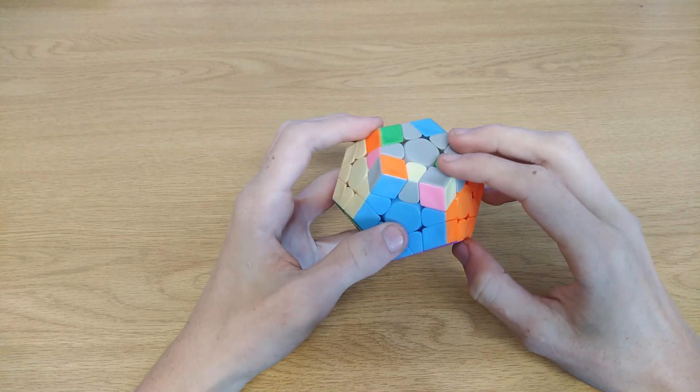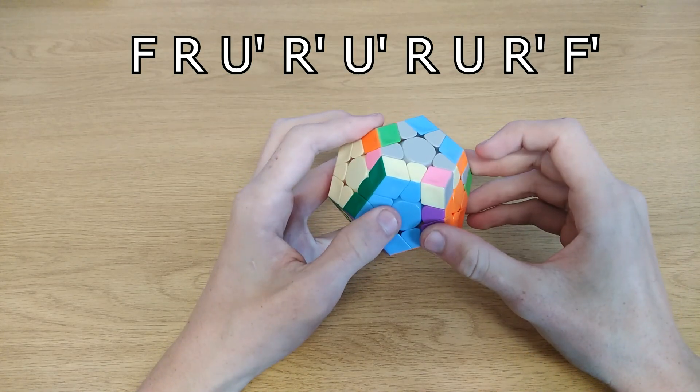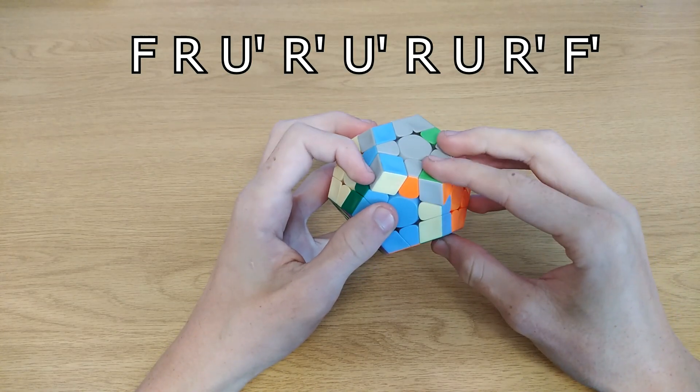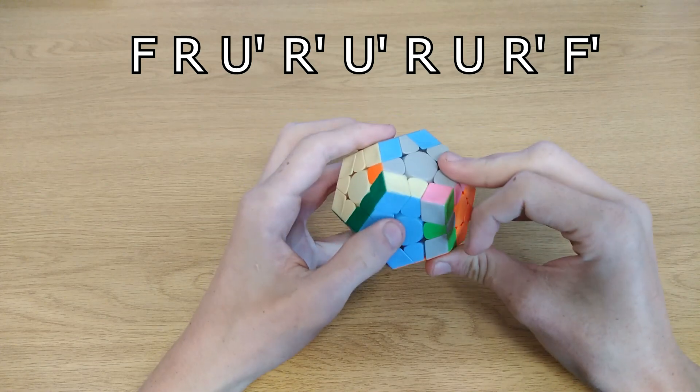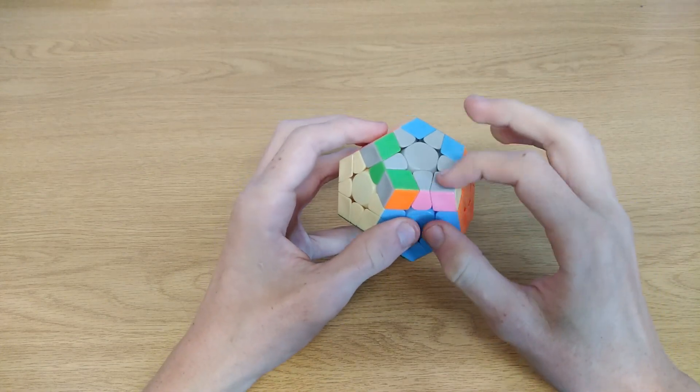So a different algorithm you can use is this one. F R U' R' U' R U R' F' and now one corner will be oriented.